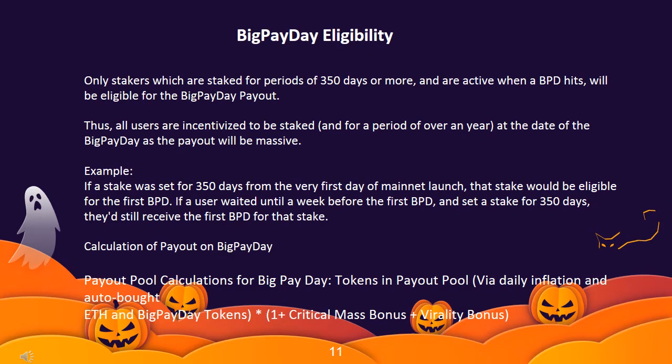Big Pay Day eligibility: only stakers who are staked for periods of 350 days or more and are active when a BPD hits will be eligible for the Big Pay Day payout. All users are therefore incentivized to be staked for over a year. For example, if a stake was set for 350 days from the very first day of mainnet launch, that stake would be eligible for the first BPD. If a user waited until a week before the first BPD and set a stake for 350 days, they would still receive the first BPD for that stake.